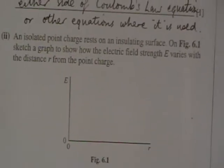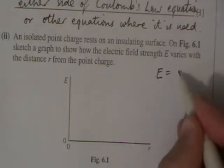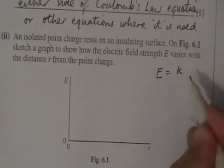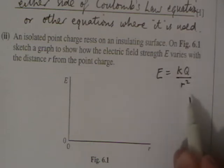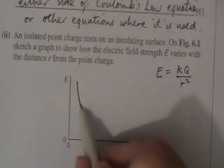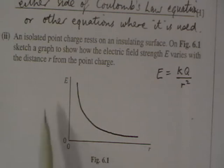Isolated point charge rests on an insulating surface. Show how the electric field strength E varies with distance. E is given by k times q over r squared, so it's an inverse square relationship, which means that we get something going like that. Important that it doesn't touch either axis, becoming asymptotic as it goes on there.